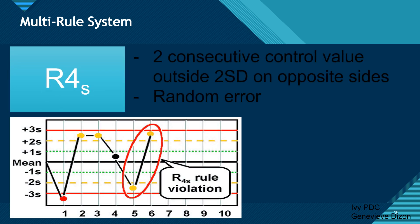The R-4-S rule means there are two consecutive control values outside the 2-SD, but on opposite sides — one on the positive side and one on the negative side, both outside the two standard deviations. This is considered a random error since the results are not on the same side. One control measurement exceeds the positive two standard deviations and another exceeds the negative two standard deviations. We also reject the results coming from these controls.